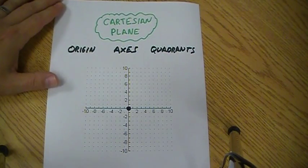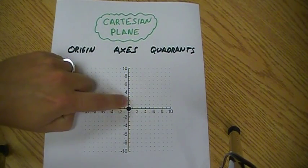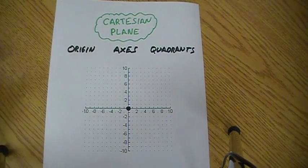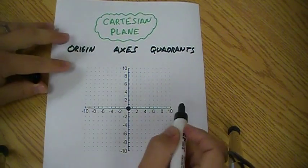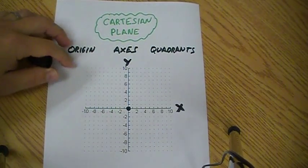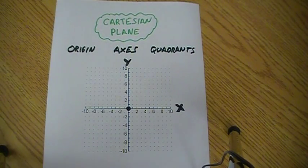This is the Cartesian plane. A Cartesian plane has an origin, which is where the two axes cross. It has a horizontal axis and a vertical axis. In general, we call this the x-axis and this the y-axis, although that can definitely change when we do different applications.